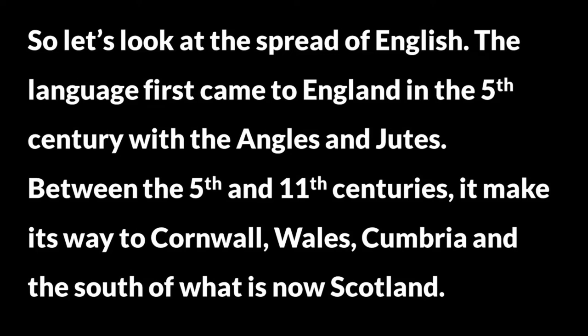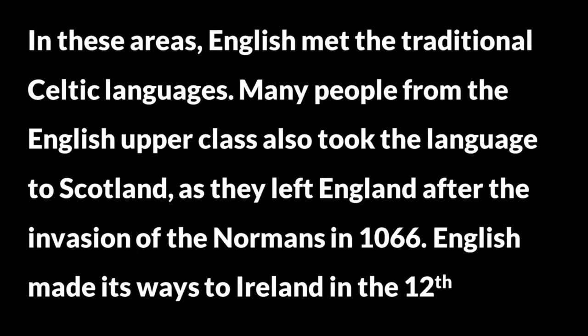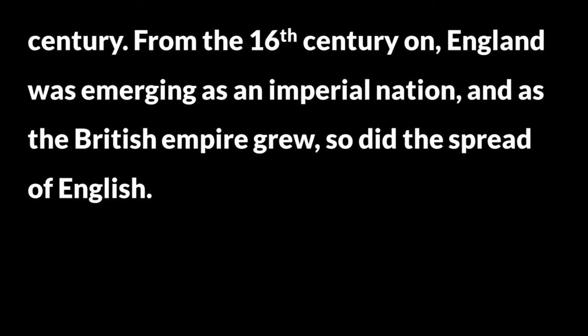The language first came to England in the 5th century with the Angles and Jutes. Between the 5th and 11th centuries, it made its way to Cornwall, Wales, Cumbria and the south of what is now Scotland. In these areas, English met the traditional Celtic languages. Many people from the English upper class also took the language to Scotland as they left England after the invasion of the Normans in 1066. English made its way to Ireland in the 12th century. From the 16th century on, England was emerging as an imperial nation, and as the British Empire grew, so did the spread of English.